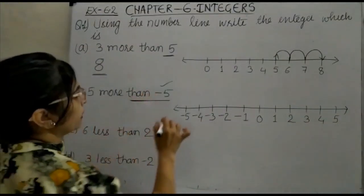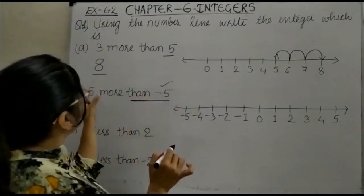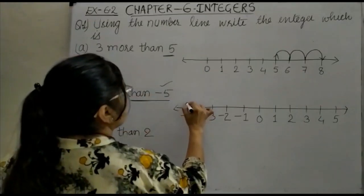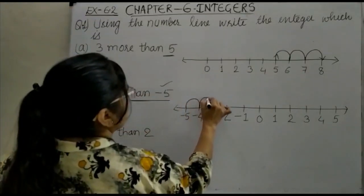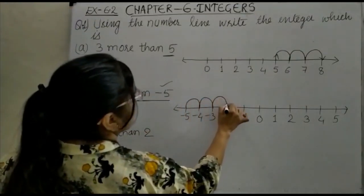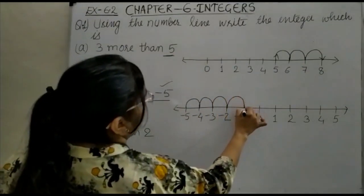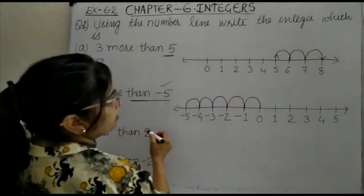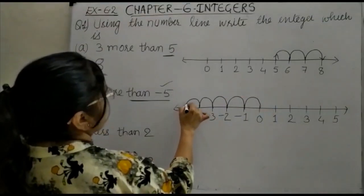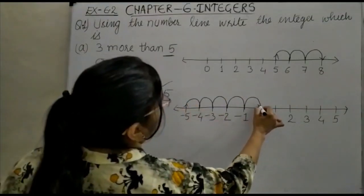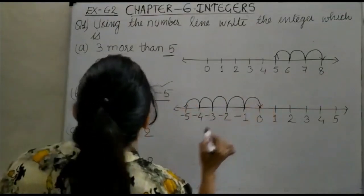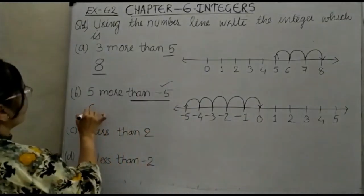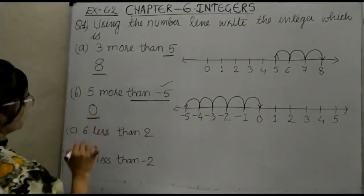We will start from minus 5 and move 5 more numbers: 1, 2, 3, 4, 5. So 5 more than minus 5 — how much will it be? The answer is 0.